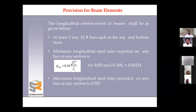In IS 456, the maximum reinforcement allowed was 4%. In IS 13920, the maximum reinforcement for a beam section is only 2.5%. After applying ductility detailing, lateral forces are reduced and simultaneously the maximum steel percentage is also reduced — the code does not allow 4% steel in beams.